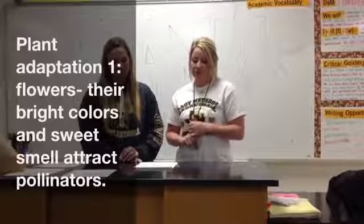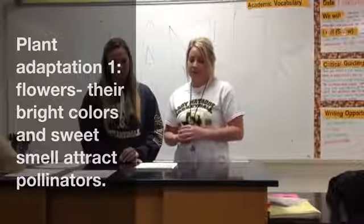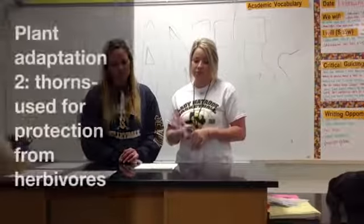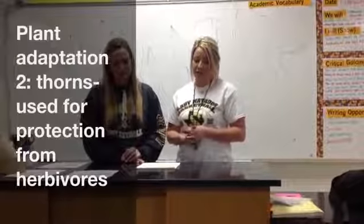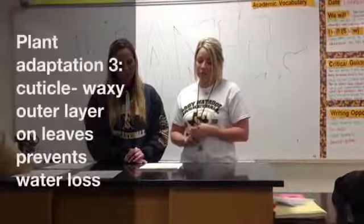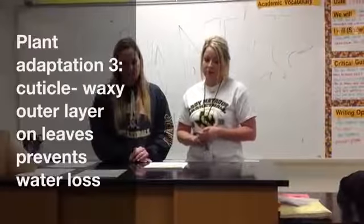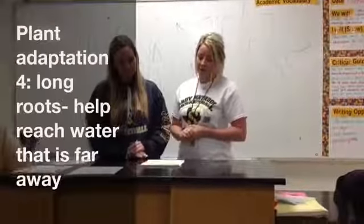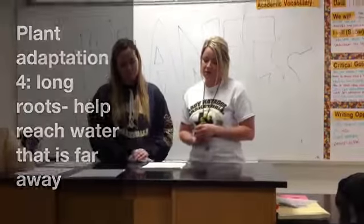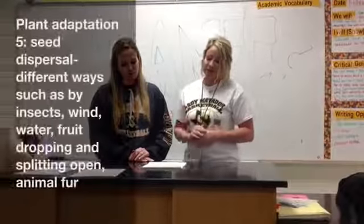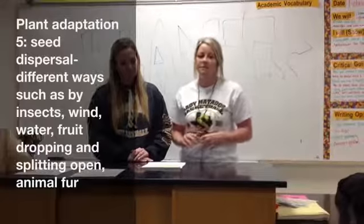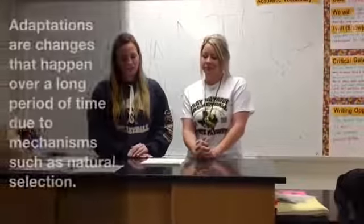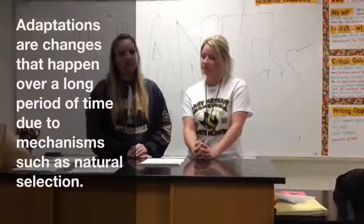When we talk about adaptations in plants, we discuss five main points. One, flowers have bright colors and sweet smell to attract pollinators. Two, thorns are used for protection. Three, cuticles have a waxy outer layer on leaves to prevent water loss. Four, roots have a long root system which helps plants access water that is far away. And five, different methods of seed dispersal. Keep in mind that these adaptations are changes that occur over a very long period of time, not something that just changes overnight.